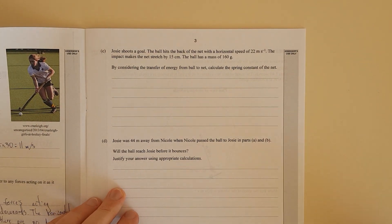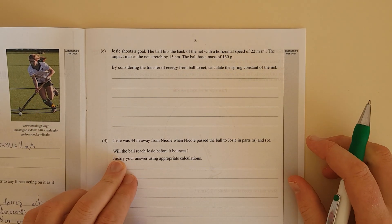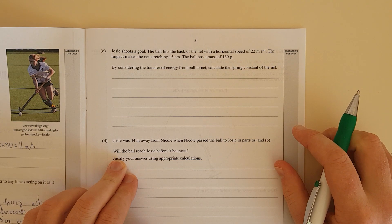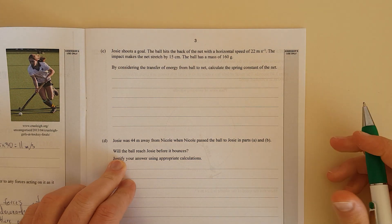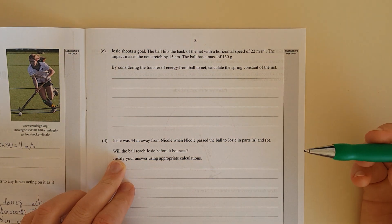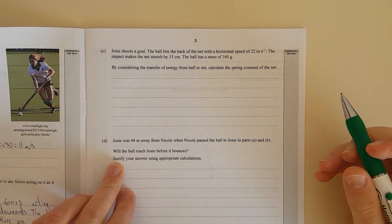Josie shoots a goal, the ball hits the back of the net with horizontal speed of 22 meters per second. The impact makes the net stretch by 15 centimeters. The ball has a mass of 160 grams. By considering the transfer of energy from the ball to the net, calculate the spring constant of the net.